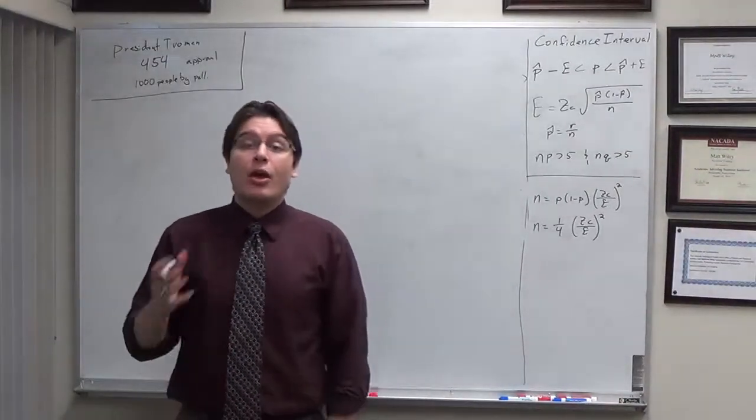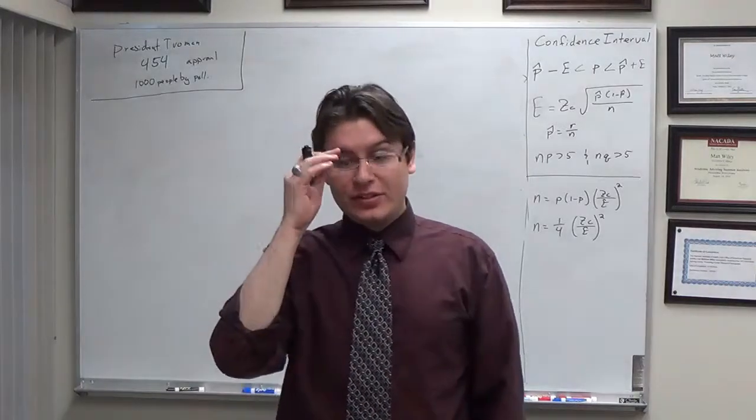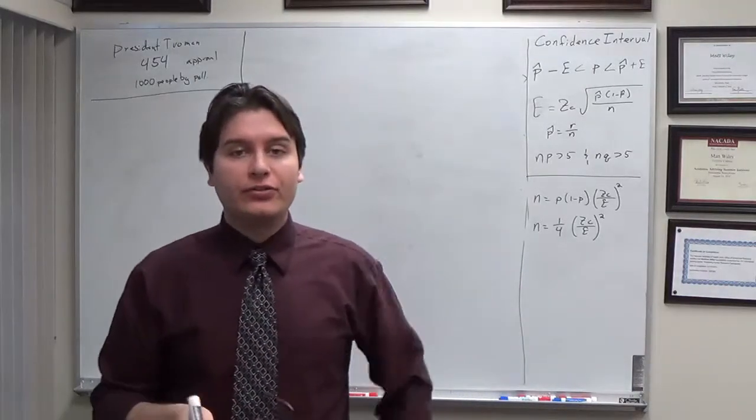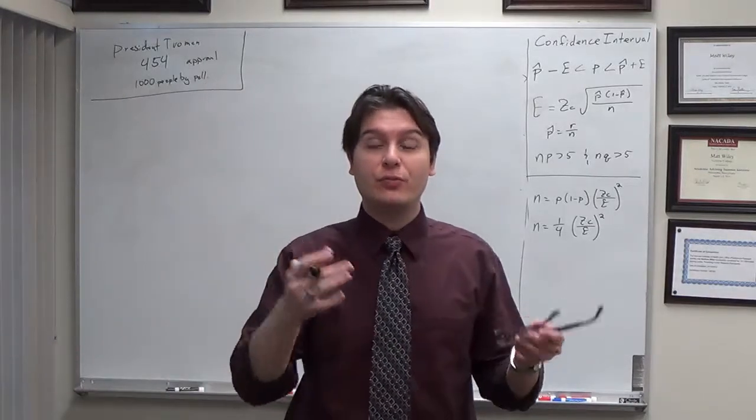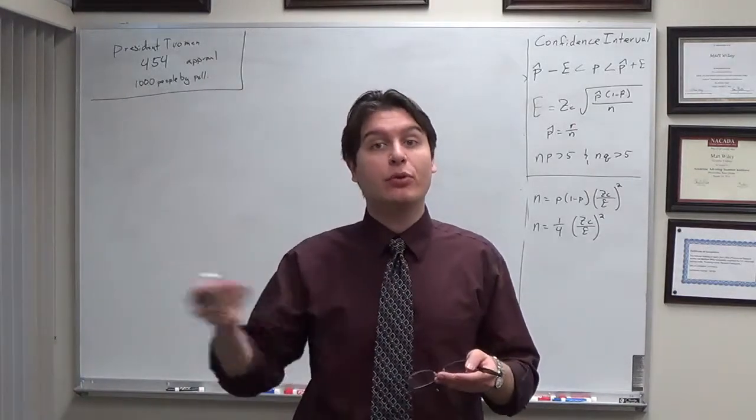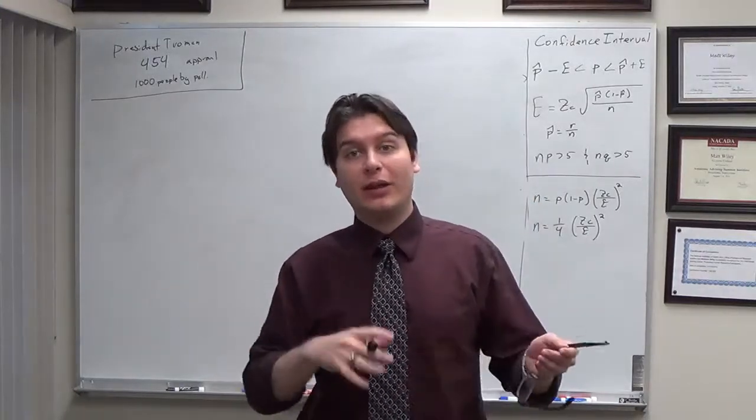Welcome back. We've talked about how to create a confidence interval if we have information about the population, namely sigma. For mu estimation, we use x-bar as our point estimator and create a range, a confidence interval around that, of plus or minus e.